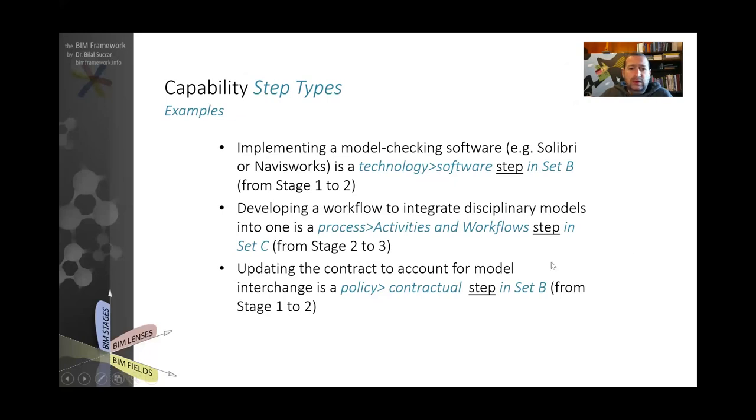They need to implement a model checking software like Solibri and Navisworks. This is a type of technology step. If you look at another example, if we want to move from stage two to stage three at the process side, developing a workflow to integrate disciplinary models like architectural and structural models—if we want to integrate them or federate them together, the workflow itself is a process. It falls under something called activities and workflow.